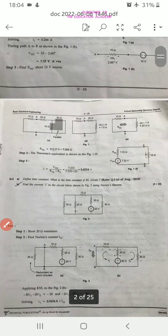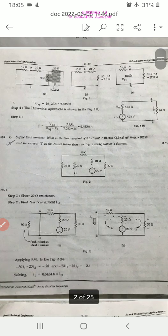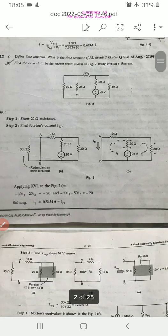Second question, define time constant. What is the time constant of RL circuit? Find the current I in the circuit below using Norton's theorem.